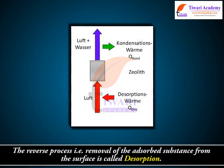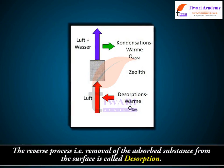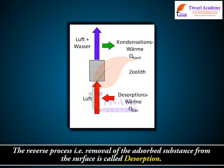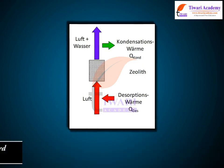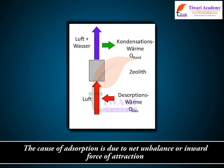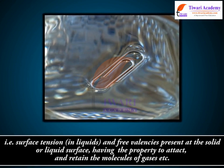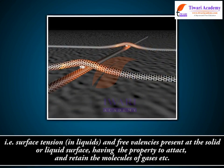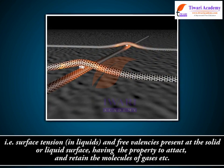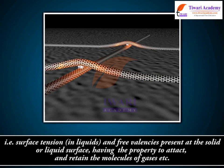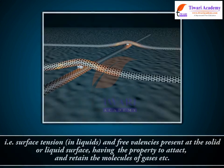The reverse process, i.e., removal of the adsorbed substance from the surface, is called desorption. The cause of adsorption is due to net unbalanced or inward force of attraction, i.e., surface tension in liquids and free valencies present at the solid or liquid surface, having the property to attract and retain the molecules of gases.